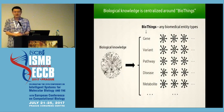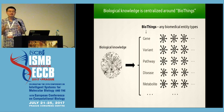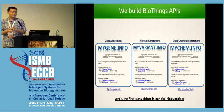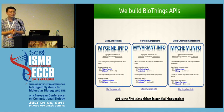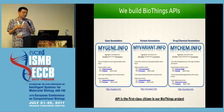BioThings is basically anything related to biological knowledge — genes, variants, pathways, disease — all these little units about biological knowledge. In the past we have built a collection of so-called BioThings APIs. For example, mygene.info, myvariant.info, and recently we released mychem.info. All of these aggregate annotations about genes, variants, and drug chemicals, so you can use these robust APIs to build your applications without repeating that work.